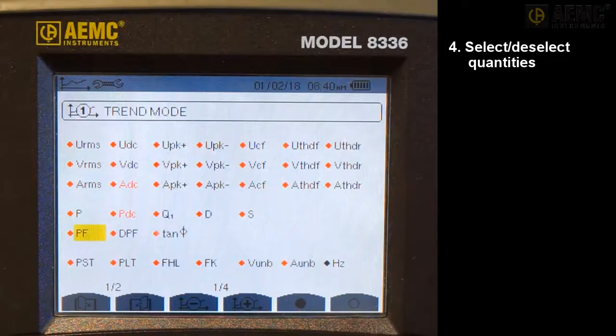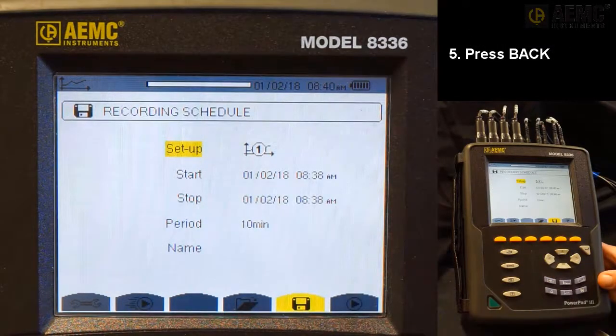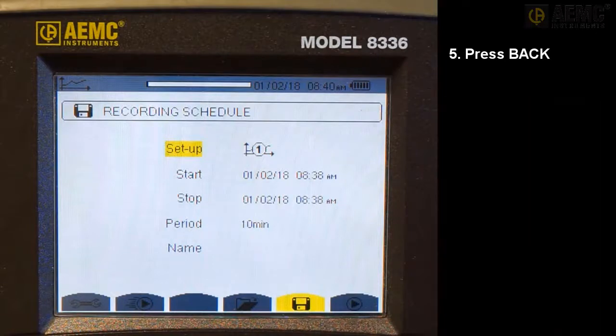Now we will schedule the recording. Press the Back button to return to the Recording Scheduled screen. This displays five input fields. Setup identifies the configuration preset, one through four. Start defines the time and date when the recording starts. This must be later than the current date and time. Stop specifies when the recording ends. This must be later than the start time. Period defines the aggregation period. This is the time over which the measurements are aggregated. Name allows you to name the test. This can be eight characters long.